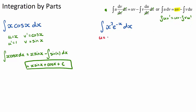So u = x², v' = e^(-x). Then u' = 2x, and v is the integral of e^(-x), which is e^(-x) divided by -1, so v = -e^(-x), remembering our integration rules.